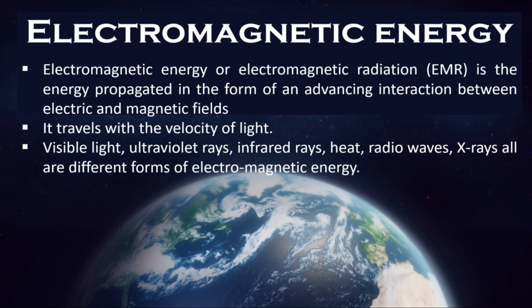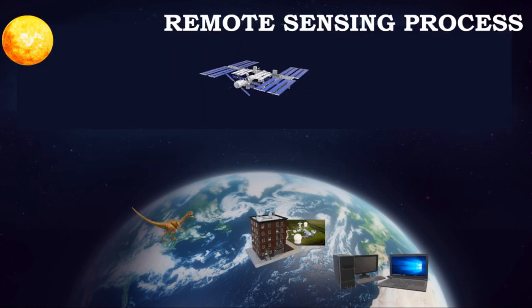We will have a detailed discussion on electromagnetic radiation in the coming classes. Now, regarding the remote sensing process — here I am trying to explain the elements that comprise the most common remote sensing process from beginning to end. Remote sensing can be performed in a variety of forms and techniques. The form we are going to discuss is the most widely used one, known as passive optical remote sensing.